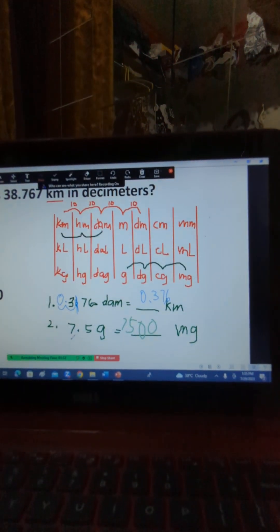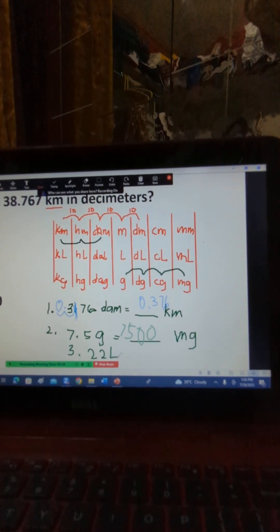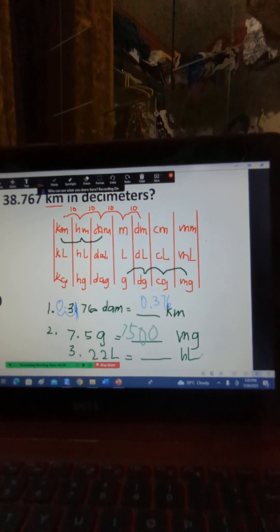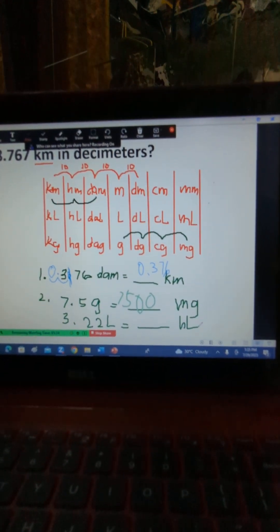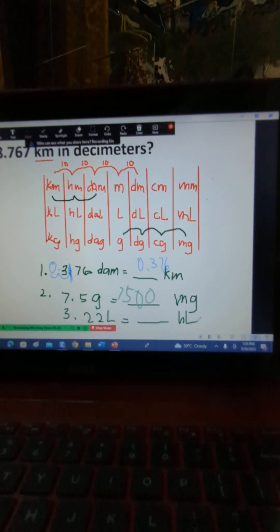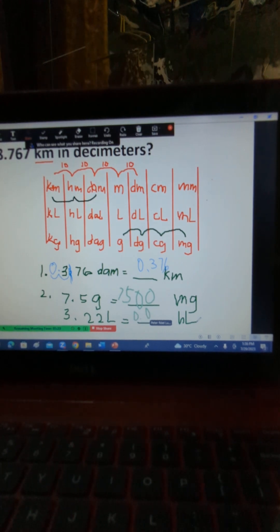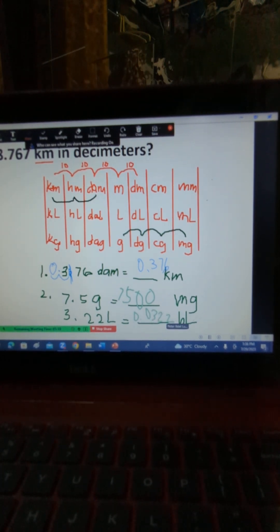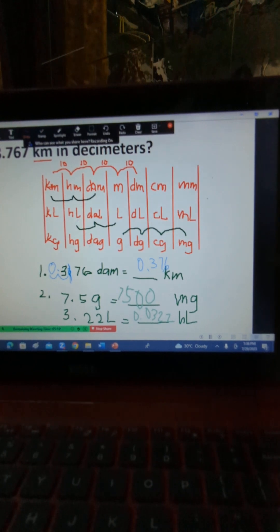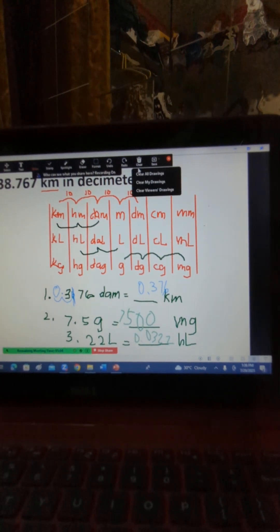What about if you have, for example, 3.22 liters, and then I want you to give the equivalent in hectolitre. 3.22 liters to hectolitre. What will you get? Liter to hectolitre. Okay, so there are two movements also. From liter, 1, 2. So the movement is to the left. Therefore, you have to move two decimal places to the left. Very good. Well, see? You learn fast. That's nice.